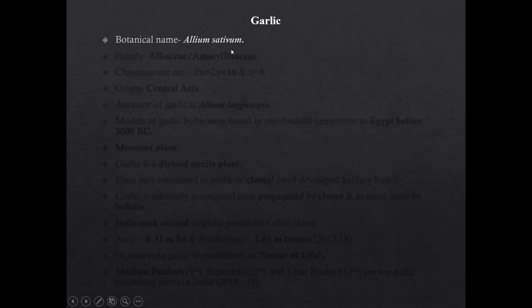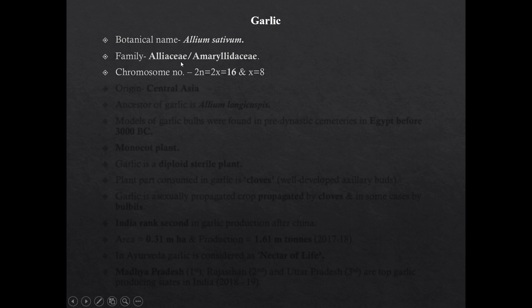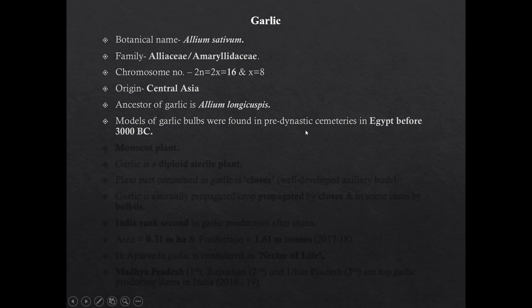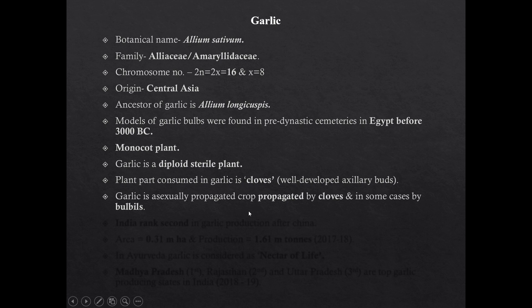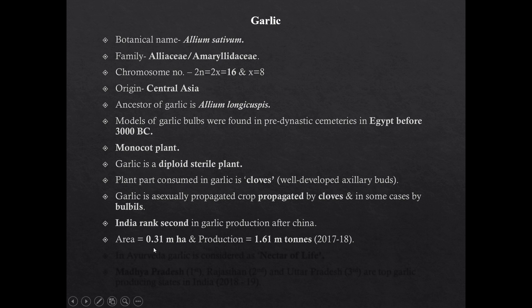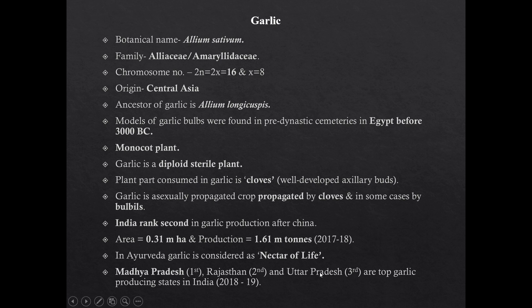The second bulb crop is garlic. Botanical name of garlic is Allium sativum. It belongs to family Alliaceae or Ammelidaceae. Chromosome number is 16. Origin of garlic is Central Asia. Ancestor of garlic is Allium longicuspis. Models of garlic bulbs were found in pre-dynastic cemeteries in Egypt before 3000 BC. Garlic is a monocot plant and a diploid sterile plant. The plant part consumed in garlic is the clove, which is a well-developed axillary bud. Garlic is vegetatively propagated by cloves and sometimes by bulbils. India ranks second in garlic production after China. Area of garlic cultivation in India is 0.31 million hectare and production is 1.61 million tons. MP, Rajasthan, and Uttar Pradesh are top garlic-producing states.